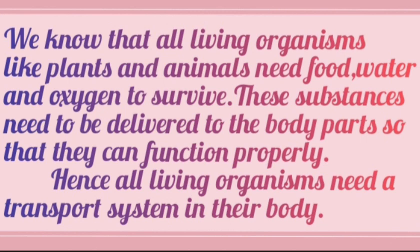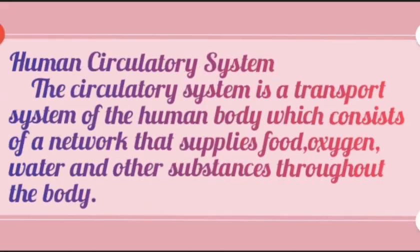One type of transport system is the circulatory system. It is a transport system of a human body that supplies oxygen, food, water and other substances throughout the body. Now this human circulatory system mainly consists of three components: blood, blood vessels and heart.